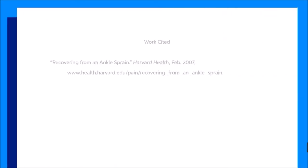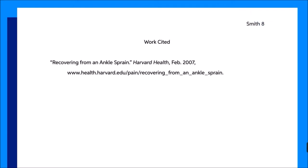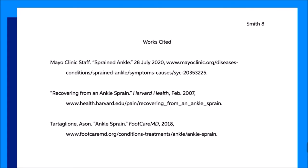In MLA, your whole paper will have what's called a running head. This shows up in the top right corner of every page of your paper, half an inch from the top edge and along the right 1-inch margin. It lists the writer's last name, followed by a space and the page number. Below this, use the title "Work Cited" if you only reference one source, and "Works Cited" if you reference more than one source. The title should be centered at the top of the page, just below the 1-inch top margin.